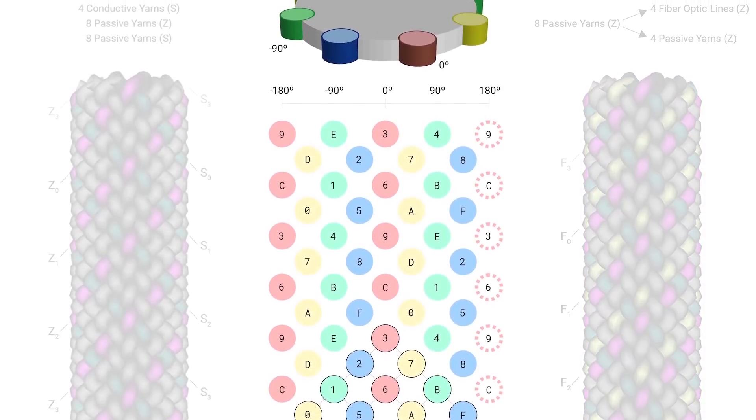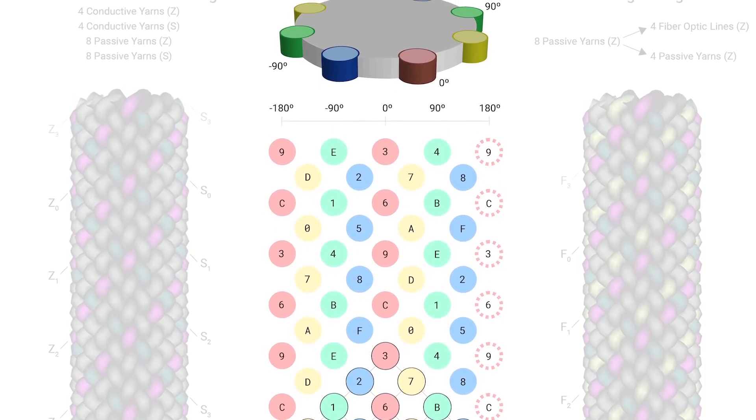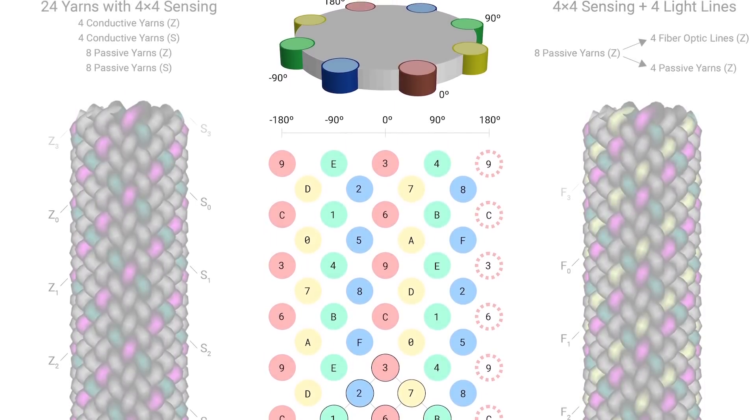Rotation gestures are detected by tracking horizontal finger motion across the red, yellow, green, and blue columns.